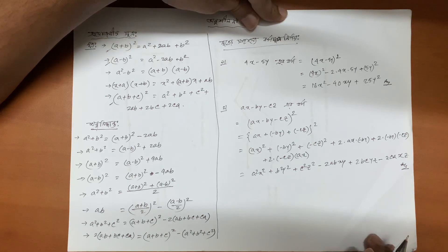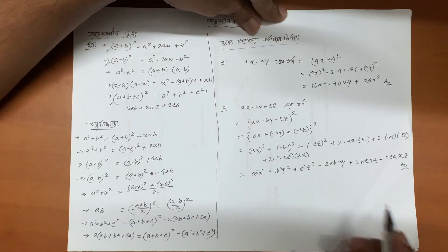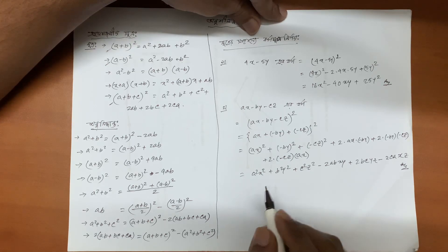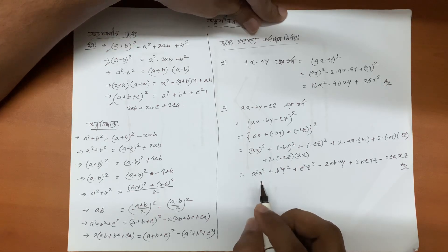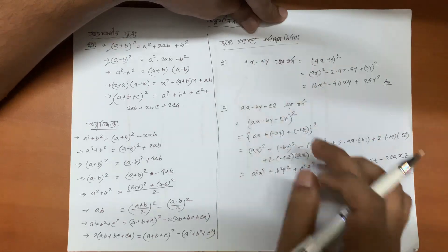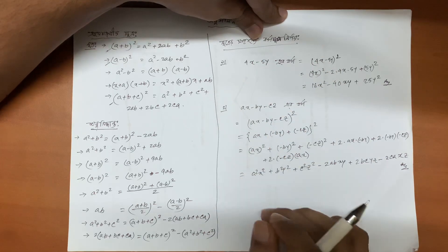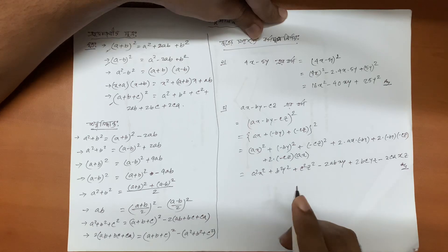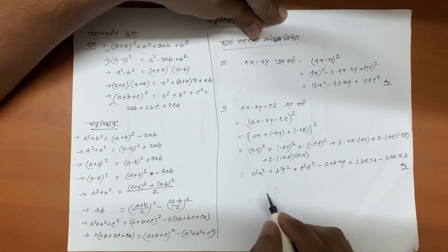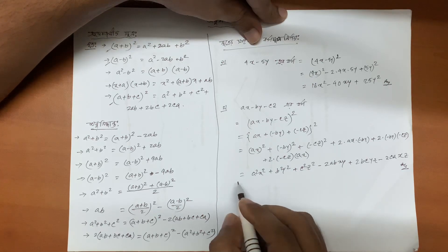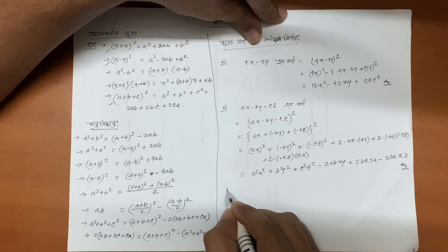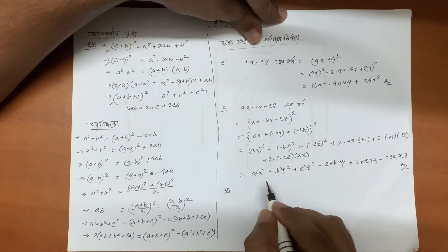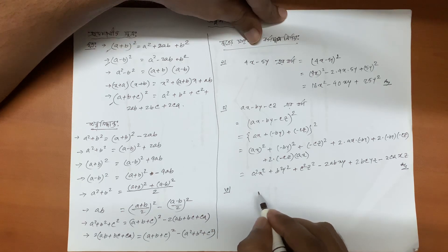Now get the answer: ax minus by minus cz. So look for the note score. Here I will tell you that for the positive, negative, negative, negative values.